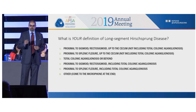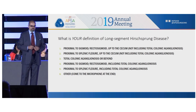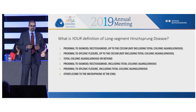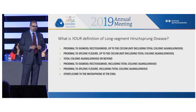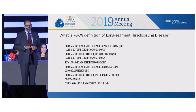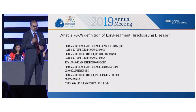For the first audience response question: what is your definition of long-segment Hirschsprung disease? Is it proximal to the sigmoid and recto-sigmoid up to the cecum, but not including total colonic aganglionosis? Is it proximal to the splenic flexure up to the cecum and not including total colonic? Is it total colonic or beyond? Is it proximal to the recto-sigmoid but including total colonic, proximal to the splenic flexure and including total colonic, or something else? Please vote.